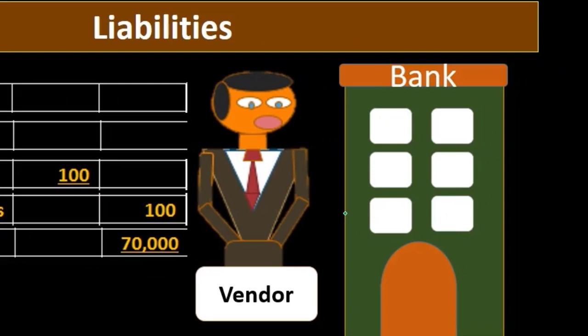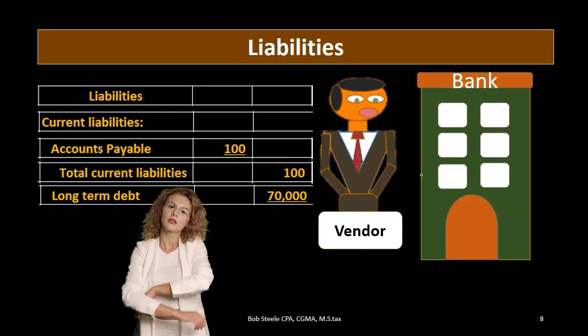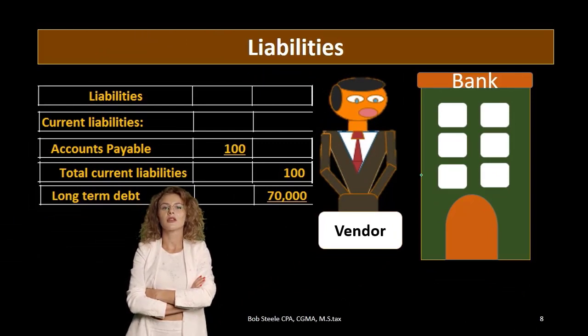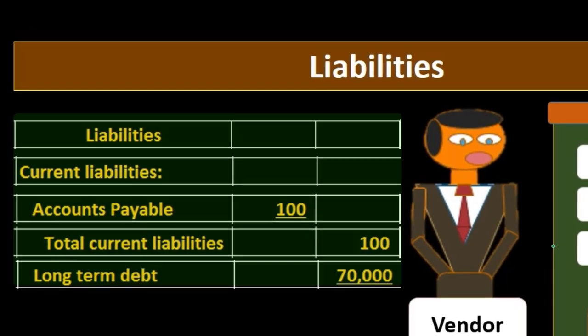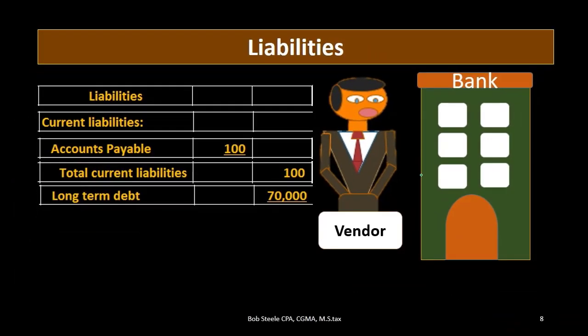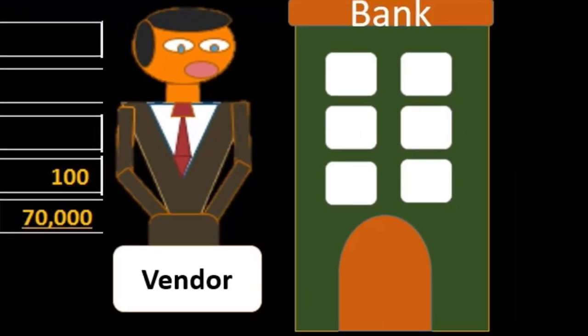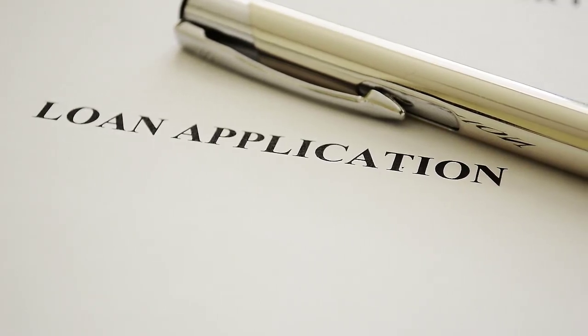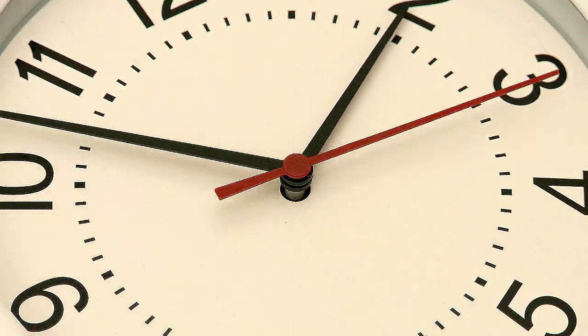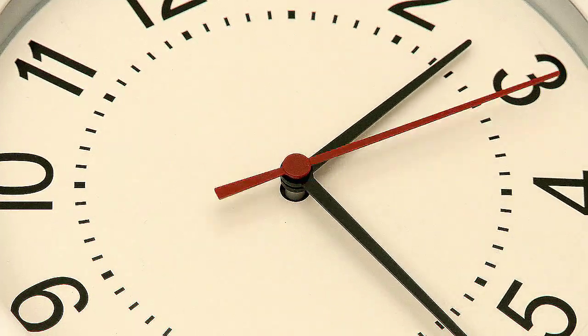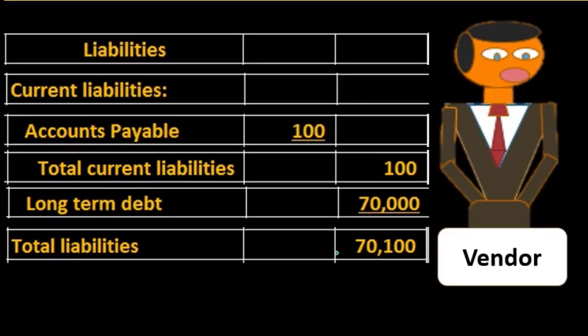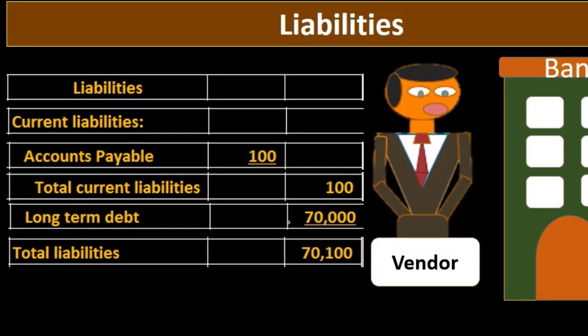Loan terms can be structured in many ways: paying back both interest and principal at a later time, or paying interest only and then the principal later. If a loan such as a mortgage has monthly payments, it would have both a current portion and a long-term portion on the balance sheet. In this example, the full amount is long-term. We then calculate total liabilities by adding current liabilities and long-term liabilities.